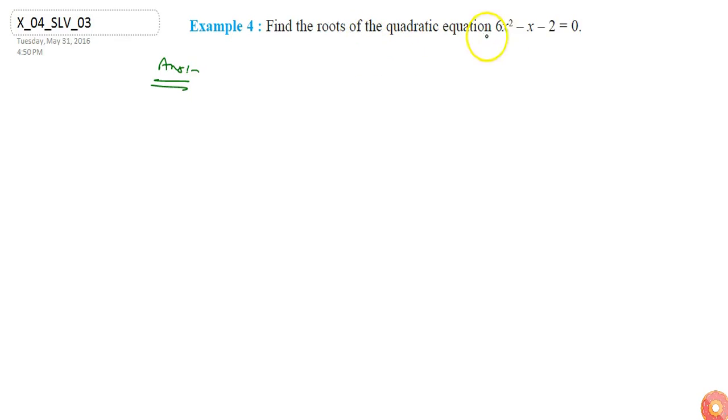To find the roots of quadratic equation 6x square minus x minus 2 equals to 0, we shall split the middle term. Here the middle term is minus x into two terms alpha and beta such that alpha and beta, let's say alpha and beta are the two terms such that alpha plus beta would be minus x.